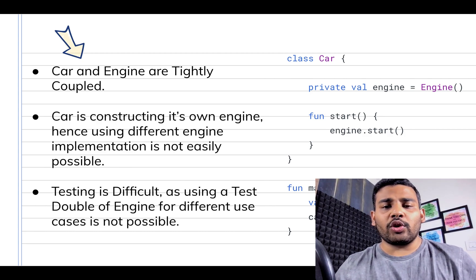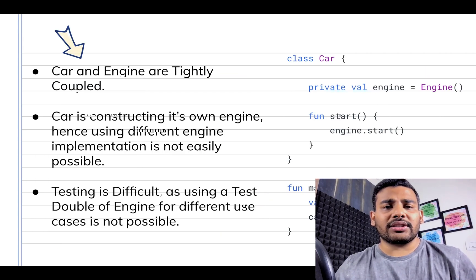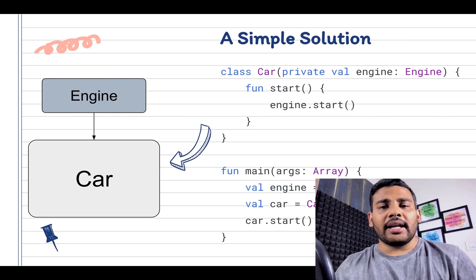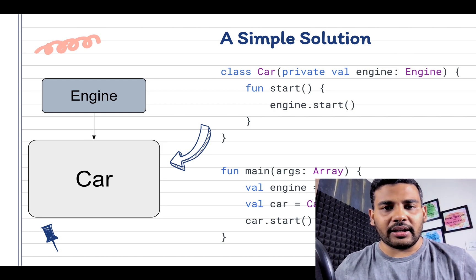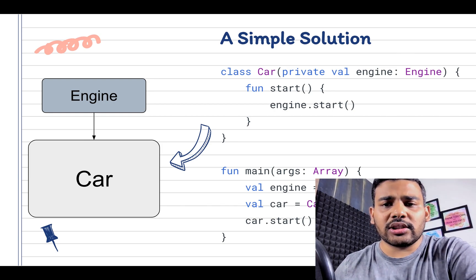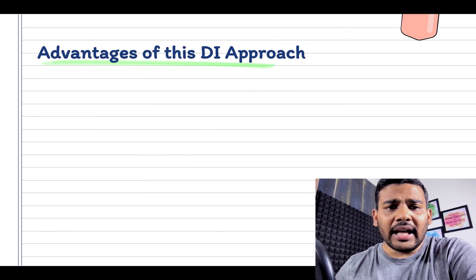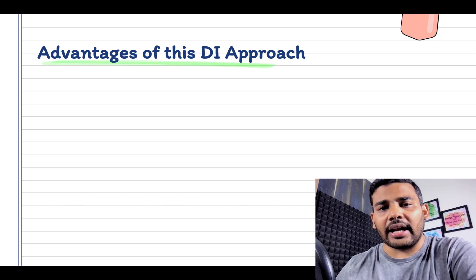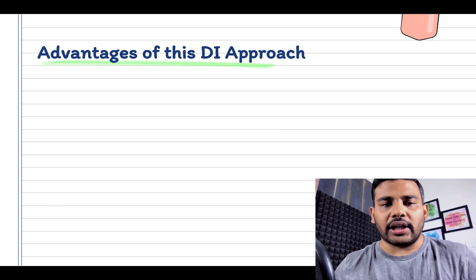Now let's move to a very simple solution. Instead of Car to construct its own Engine, this time we are passing the Engine as a constructor parameter. Now this approach will solve all the problems that we discussed.